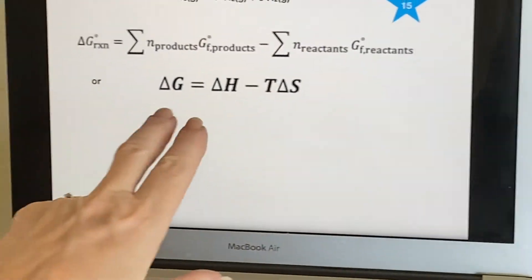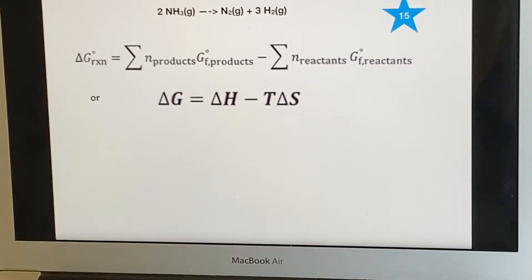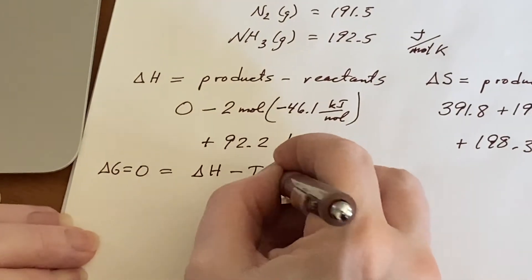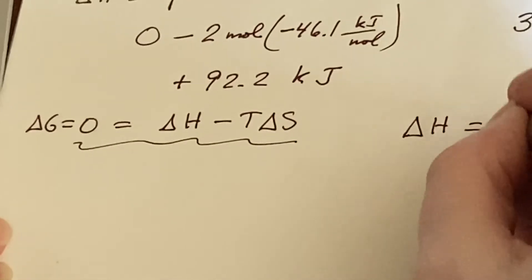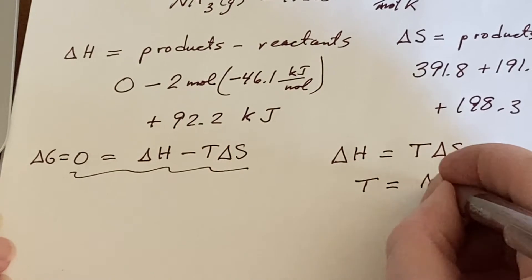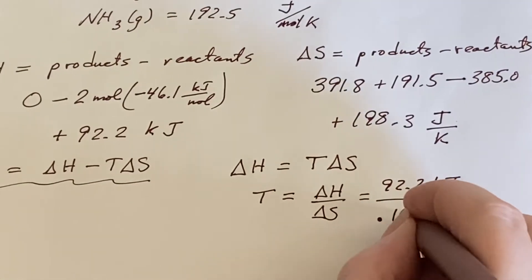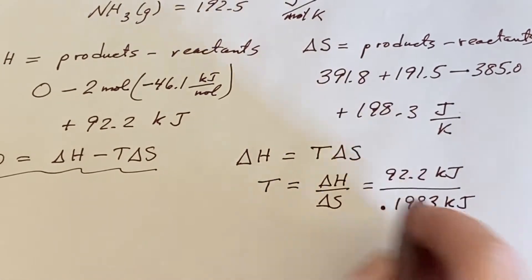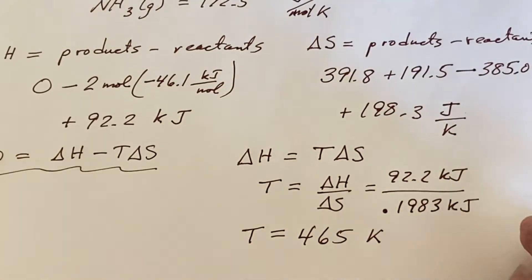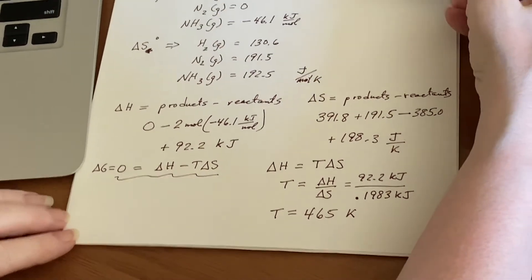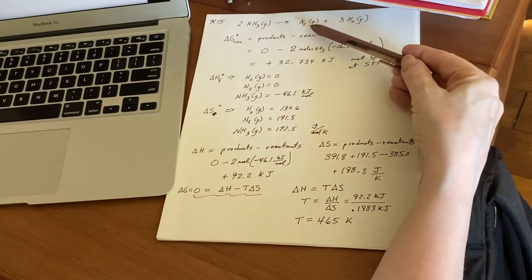Looking for that crossover temperature: it happens when ΔG is zero, which means ΔH minus TΔS equals zero. Rearranging, we ask when does ΔH equal TΔS, or what is T? T equals ΔH over ΔS. Plugging in the numbers: 92.2 kJ divided by 0.1983 kJ/K gives a crossover temperature of 496 Kelvin. So while this would not be spontaneous at standard temperatures, when we raise the temperature high enough, ammonia will spontaneously decompose into nitrogen and hydrogen.